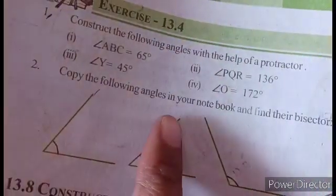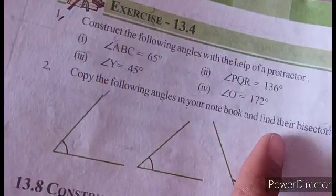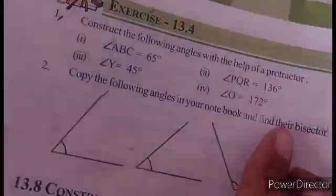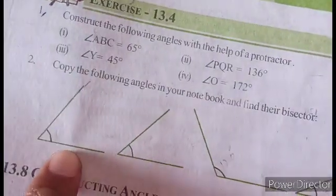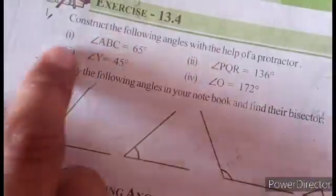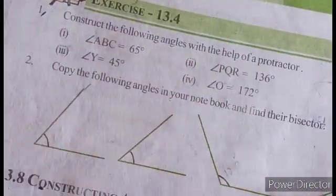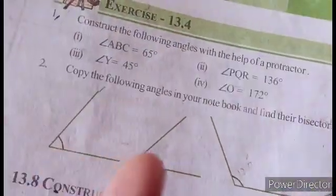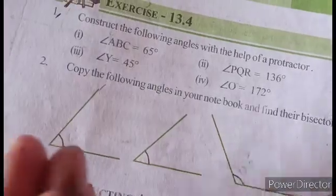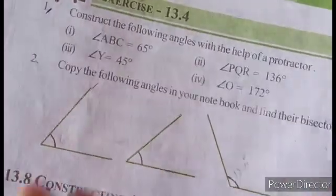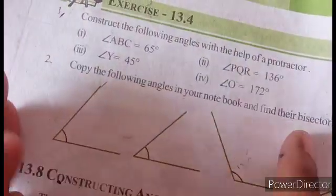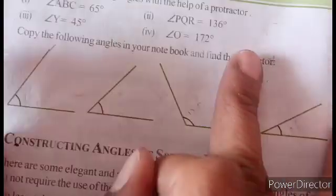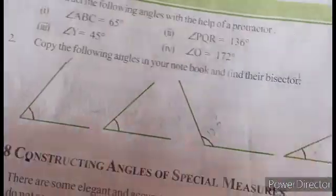Copy the following angles in your notebook and find their bisectors. These are the angles. You can see the angles and you can see the bisectors. So you can see the protractor.